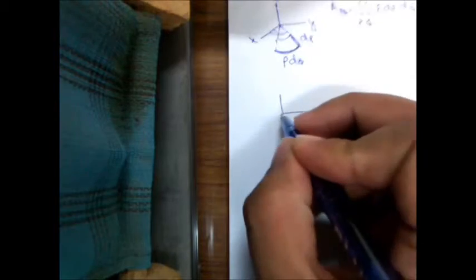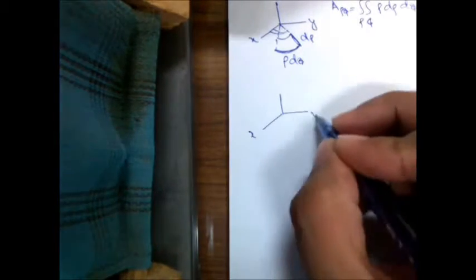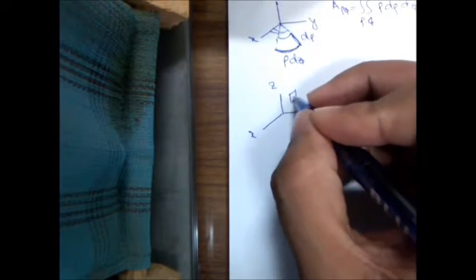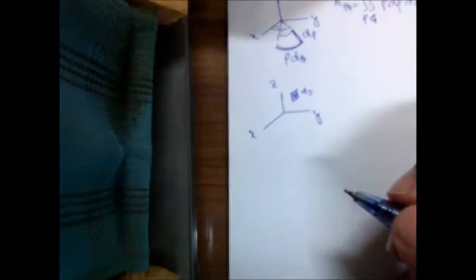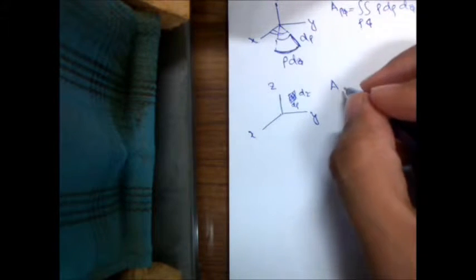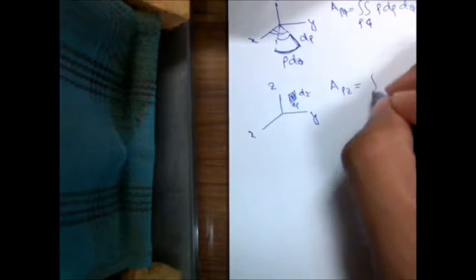The next is the rho-z plane. In the rho-z plane, a small incremental length can be thought of as dz along the z axis and d rho along the rho axis. So the area in the rho-z plane can be calculated for given ranges of rho and z by integrating d rho dz. It's very simple.